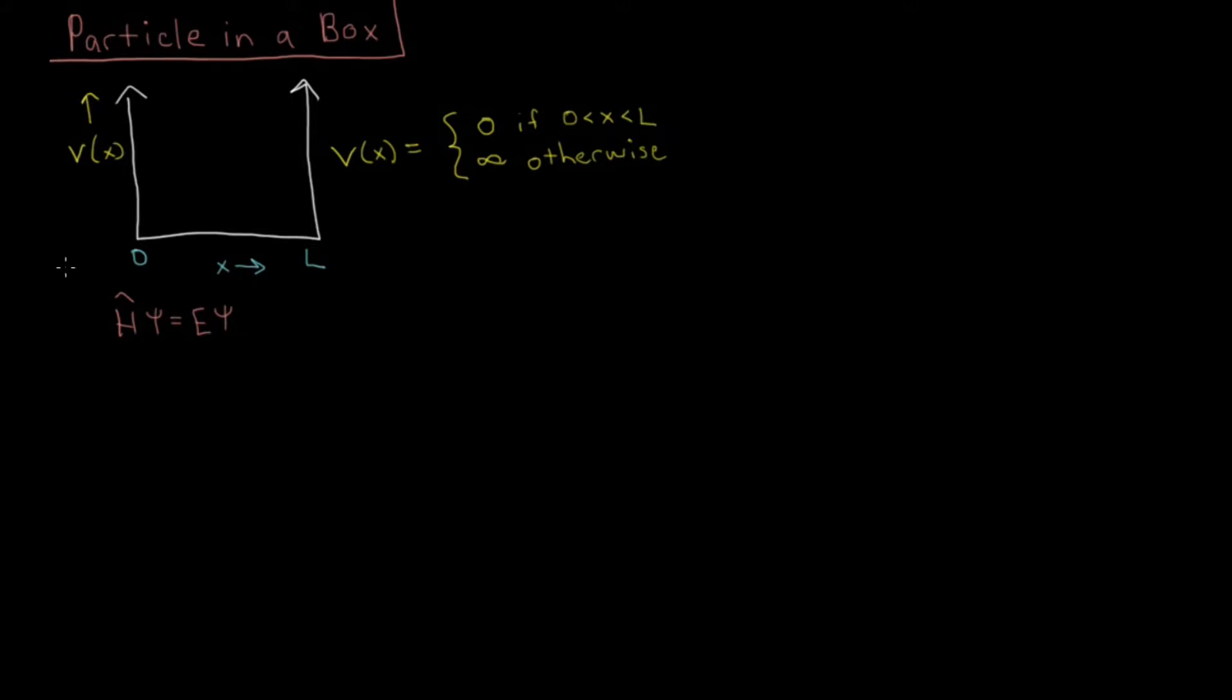If we write this out in more detail, the Hamiltonian, we have minus reduced Planck's constant squared over two times the mass, second derivative of the wave function with respect to X,